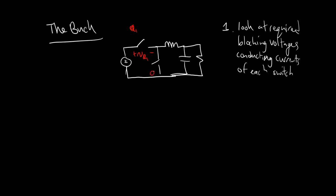We can call this thing Q2, and define this as VQ2. Given passive sign convention — what we typically use to define voltages and currents in devices — we'll say this is IQ1 and this is IQ2, because we expect these to dissipate power and expect the current to go into the positive terminal. This is just a choice, but once you make a choice, you better stick with it.